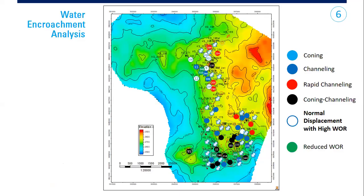And after knowing its mechanism, you plot it, like this one. You indicate which well suffer water conning, which well suffer channeling, which well give us rapid channeling, or the combination of conning and channeling, which well show normal displacement with high water-oil ratio, or maybe some well show reduced WOR. And plot all this result, and you can know better your reservoir. This is your task, a reservoir engineer.